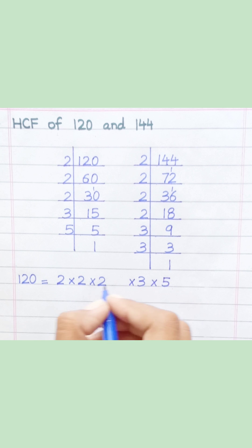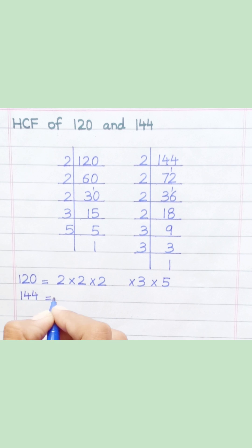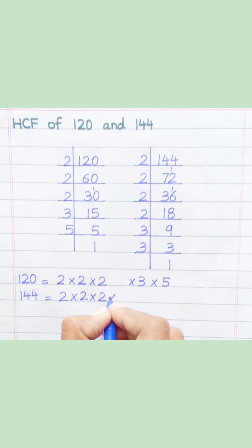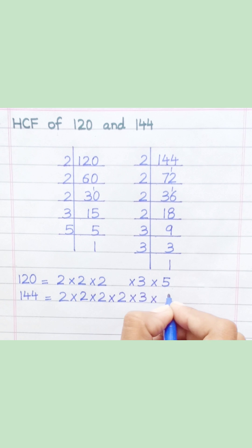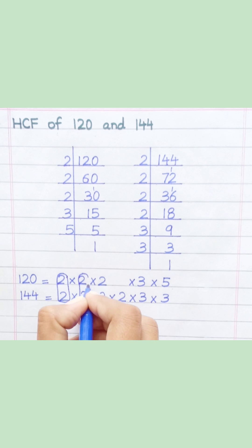144 equals 2 multiply 2 multiply 2 multiply 2 multiply 3 multiply 3. Loop the common prime factors among both.